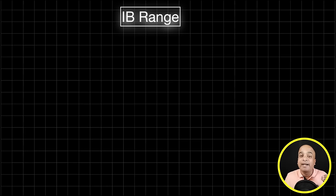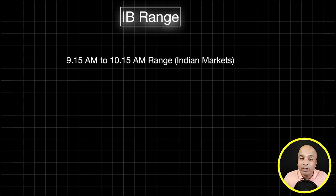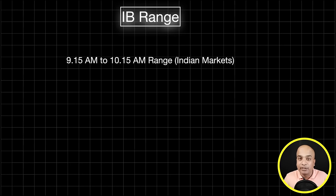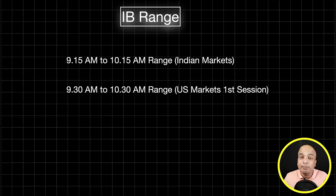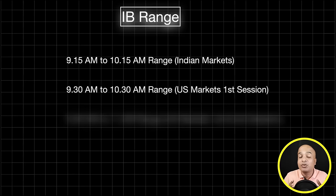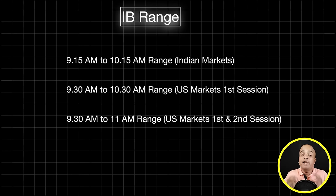All day structures are identified using the IB range, which is the initial balance range. The Indian market operates between 9:15 AM to 3:30 PM, so the first one-hour range — 9:15 AM to 10:15 AM — forms the IB range. The US market operates in two sessions. If you trade only the first session between 9:30 AM to 4 PM, you can use a one-hour range as the IB range. But if you carry intraday trades to the second session, you can use a 1.5-hour range as the IB range.